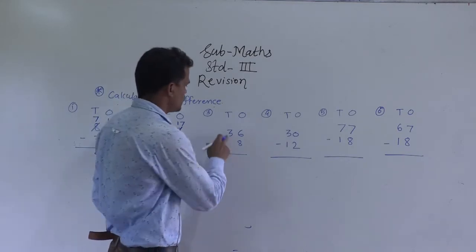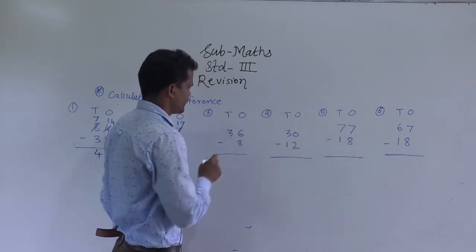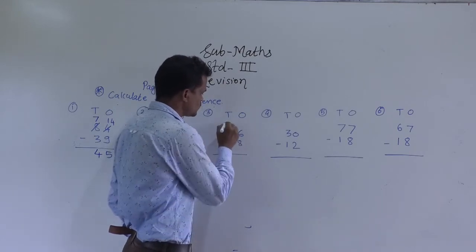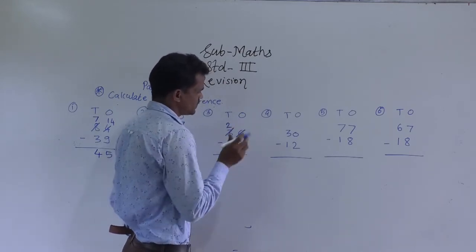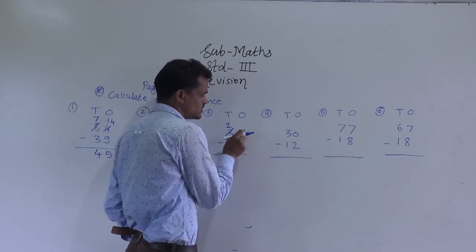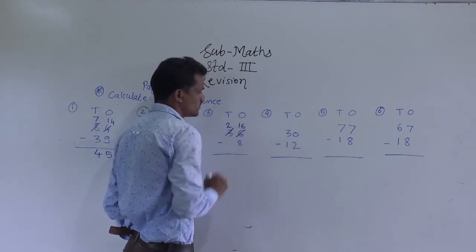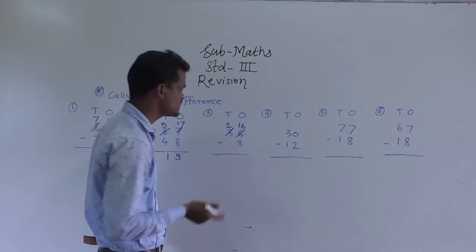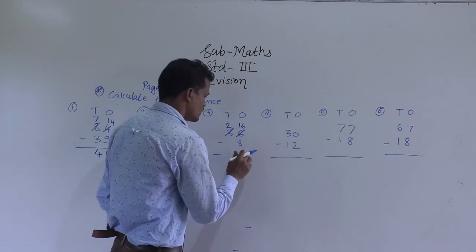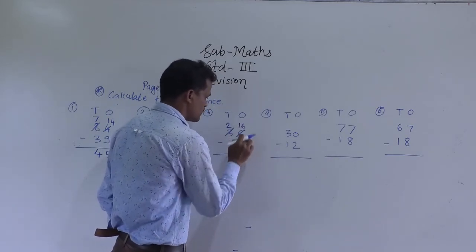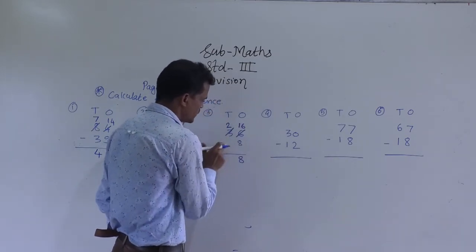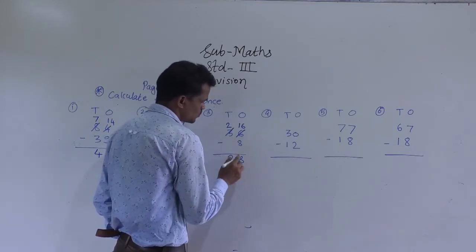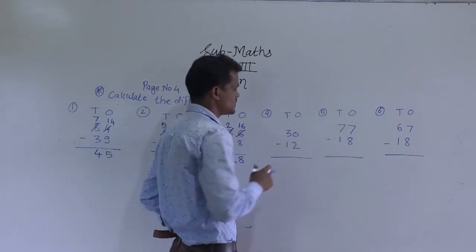Next example: 36 minus 8. 6 minus 8 is not possible. So, regroup this 3 tens into 2 tens and 10 ones. Add those 10 ones into this 6 ones to get 16 ones. Now 16 minus 8 is 8. Then for the tens place, there is no digit in 8, so consider 0 is there. 2 minus 0 is 2. So 28 is the answer.